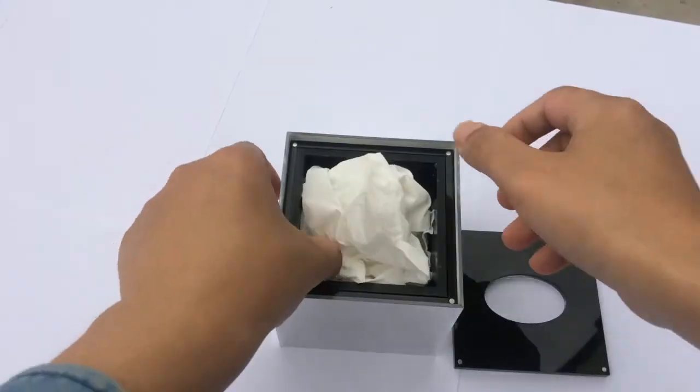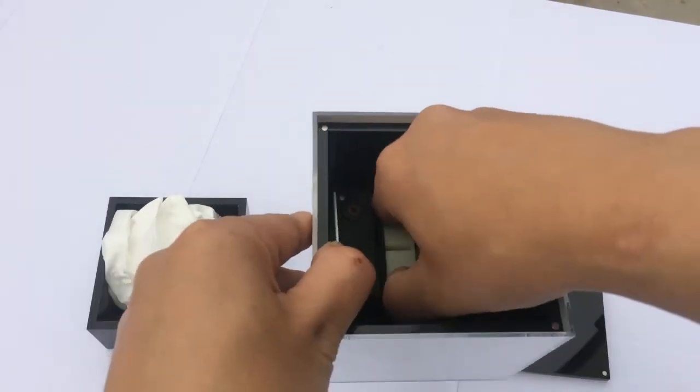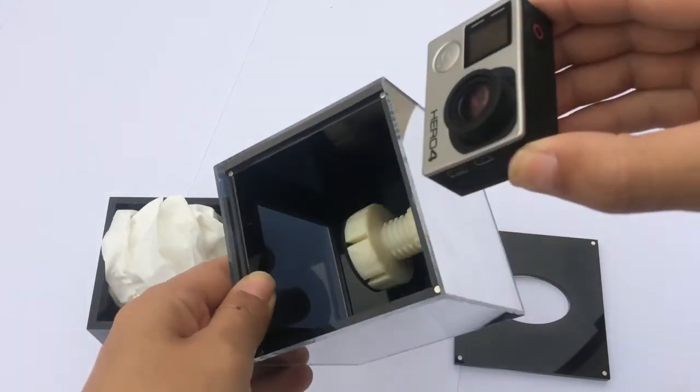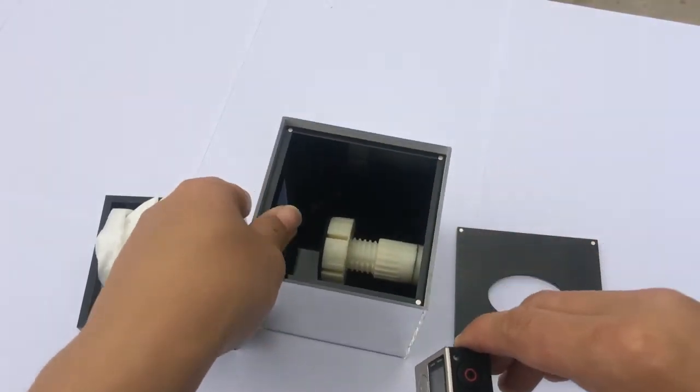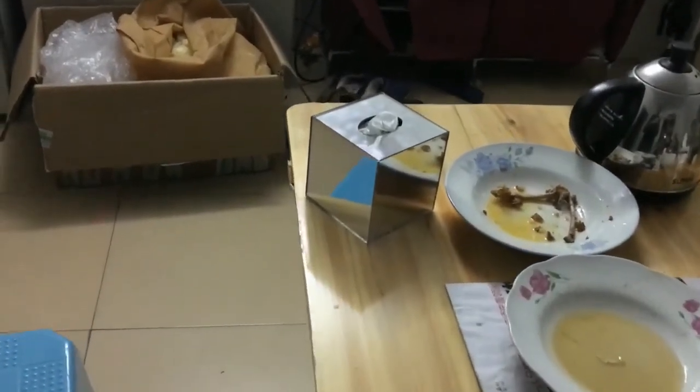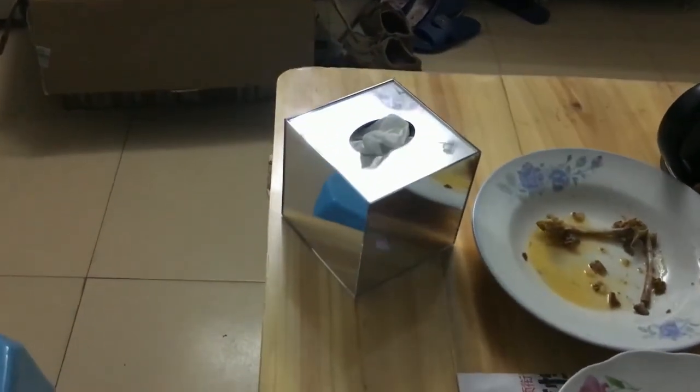After you finish your recording, you can take out the tissue box cover and small tissue holder. Unscrew the sports camera support and take out the camera. Thanks for watching this video and see you around.